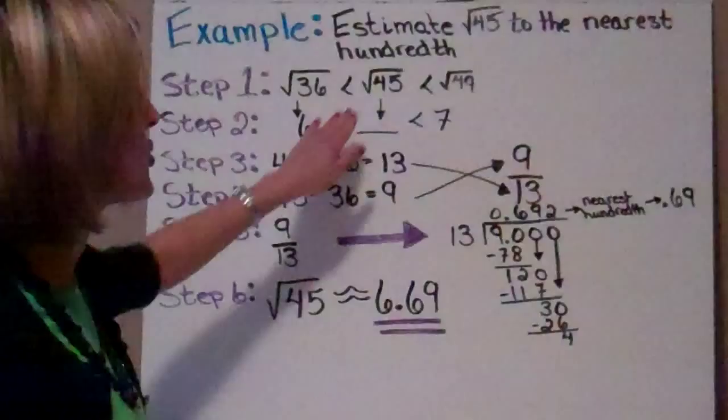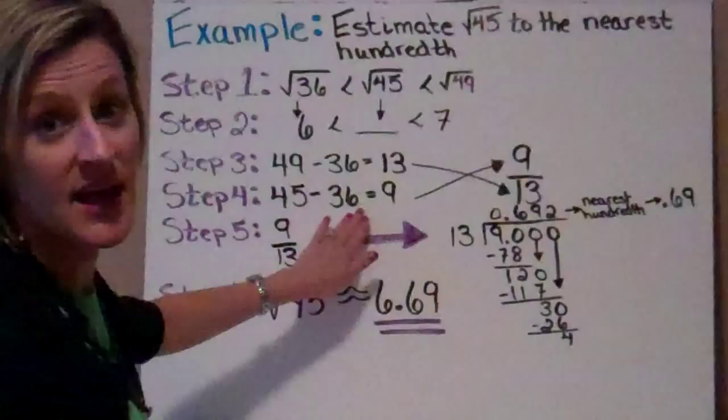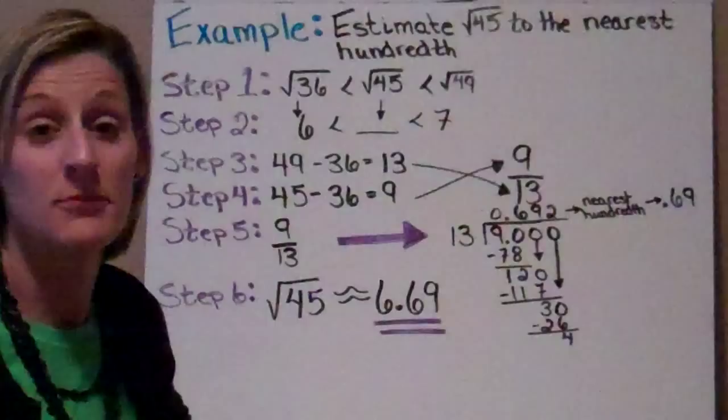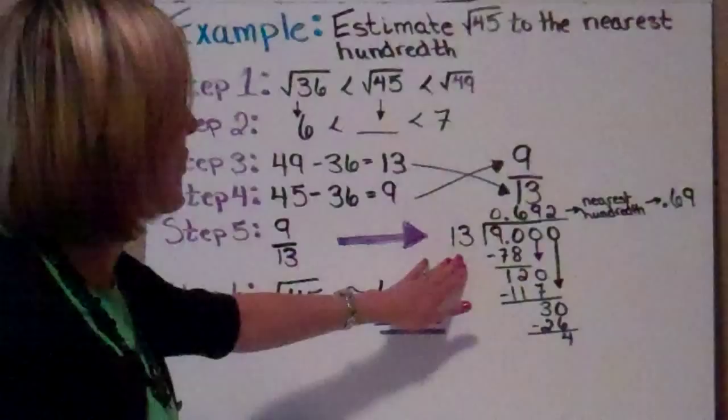Step 4: you're going to take the square root you're trying to find and subtract the smallest perfect square. So you're going to do 45 minus 36, and that's 9. That's your numerator. Notice in both of these, each time you're using the smallest perfect square you're subtracting it from. So step 5, we're going to take 9 and divide it by 13.